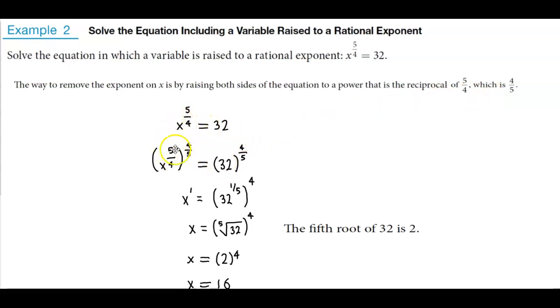So the first thing we want to do is raise both sides of the equation to 4 fifths. On the left side, 5 fourths times 4 fifths is 20 over 20, which gives you an exponent of 1.